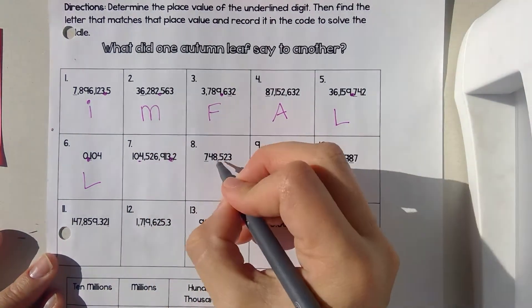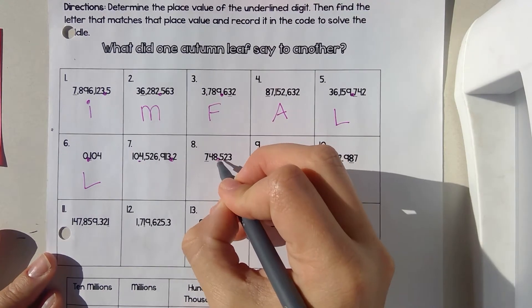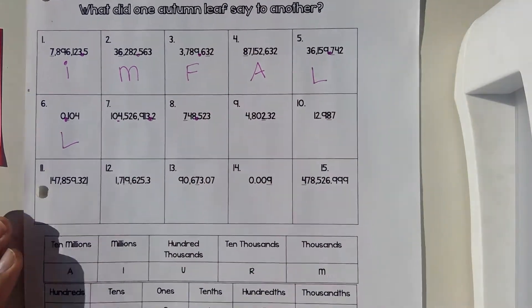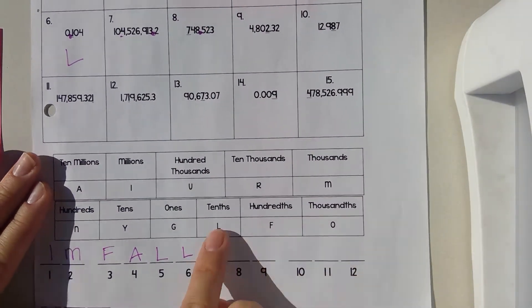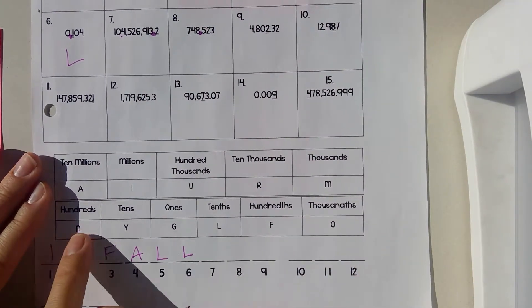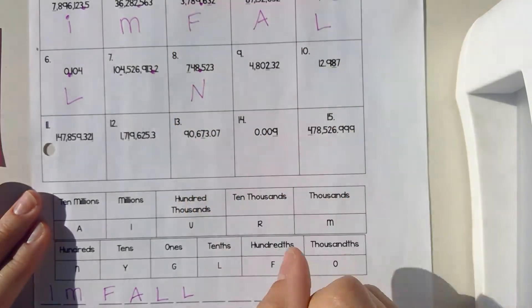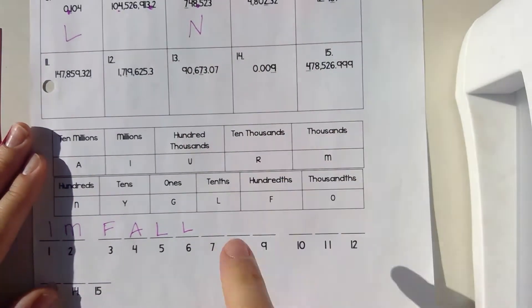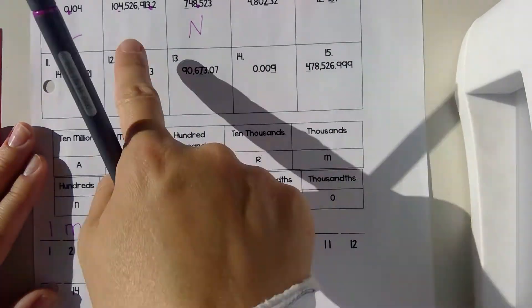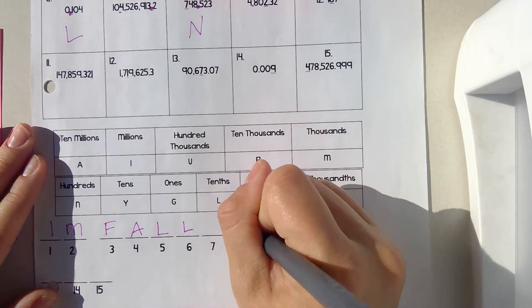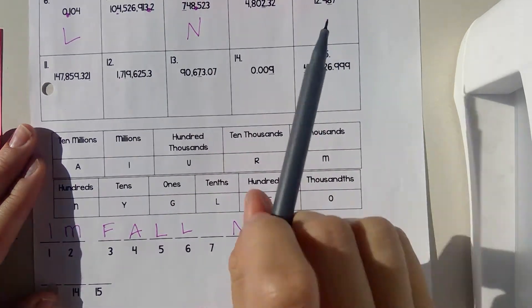Number eight — this is my decimal. So that would be ones, tens, hundreds. Hundreds is an N. We had to leave seven open because it didn't have an underlined digit. So number eight was N.